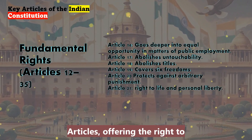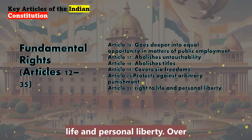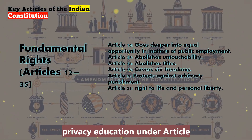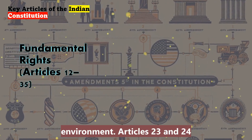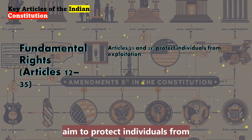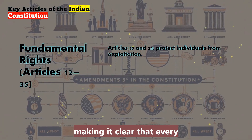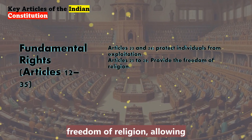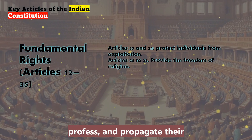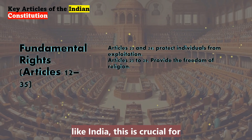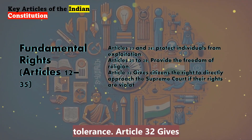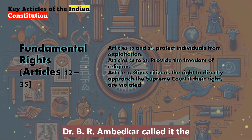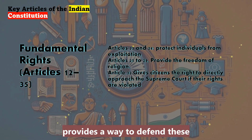Article 21 is one of the most expansive articles, offering the right to life and personal liberty. Over time, the Supreme Court has interpreted this to include the right to live with dignity, privacy, education under Article 21A, and even a clean environment. Articles 23 and 24 aim to protect individuals from exploitation, prohibiting human trafficking and child labour, making it clear that every individual's dignity matters. Articles 25 to 28 provide the freedom of religion, allowing individuals to practice, profess, and propagate their faith — crucial for religious harmony in a secular country like India. Article 32 gives citizens the right to directly approach the Supreme Court if their rights are violated. Dr. B.R. Ambedkar called it the heart and soul of the Constitution because it provides a way to actively defend these fundamental rights.